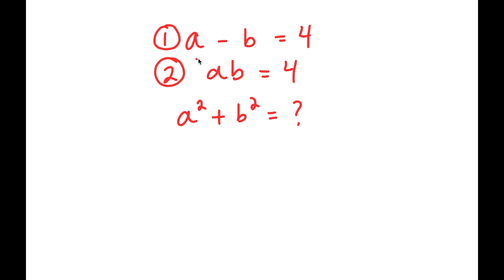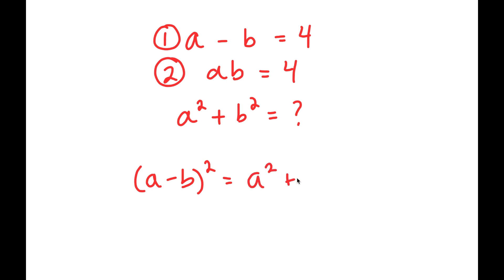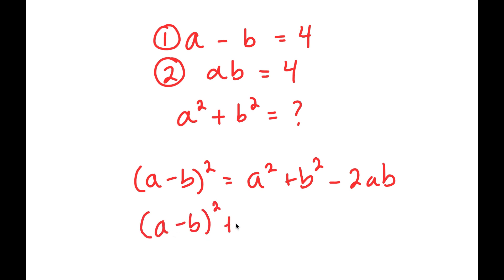To start, I have a minus b equals 4, and what I'm going to do is square this. So I get a minus b squared, and a minus b squared is equal to a squared plus b squared minus 2ab. Meaning that a minus b squared plus 2ab is equal to a squared plus b squared.